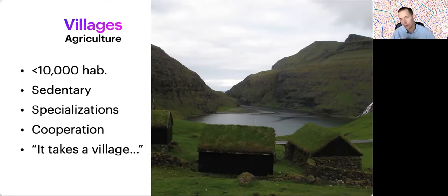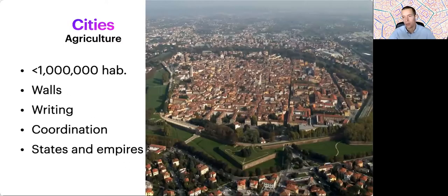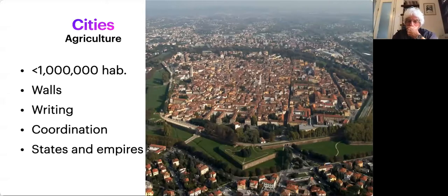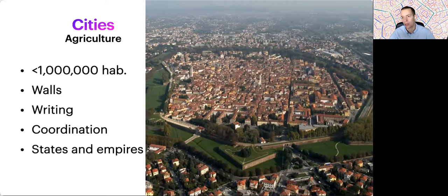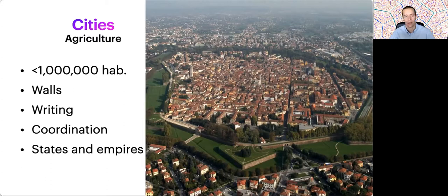This is not something recent, but something that actually characterized our species and others as well. With the greater development of agriculture, we have cities. The greatest city of the agricultural age was Angkor Wat, with about a million people — more or less the area of present-day Berlin. It had walls, writing was developed, and this required coordination among even more inhabitants, leading to the rise of states and empires — a transition in the level of organization and in the complexity of settlements.